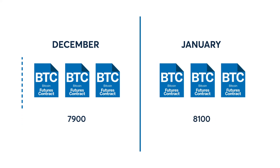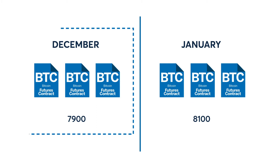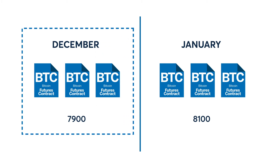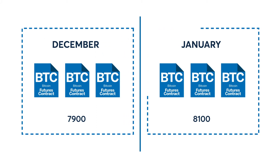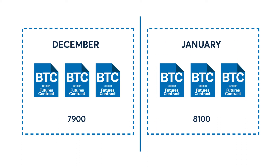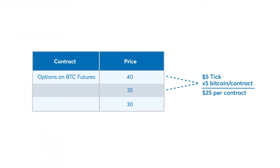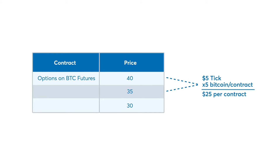Prices of options with a December expiration will follow the December futures, and prices of options with a January expiration will follow the January futures contract. The minimum price fluctuation, or tick increment, for options on Bitcoin futures will be 5 points, equal to $25 per option.